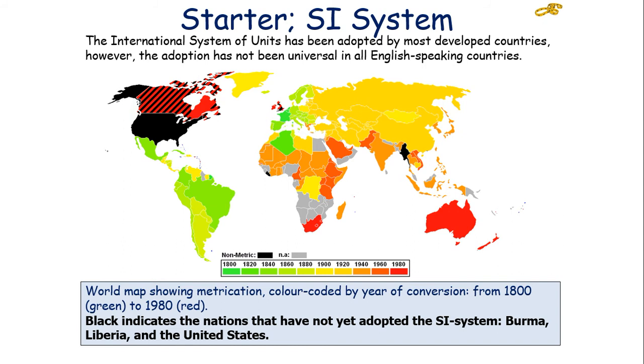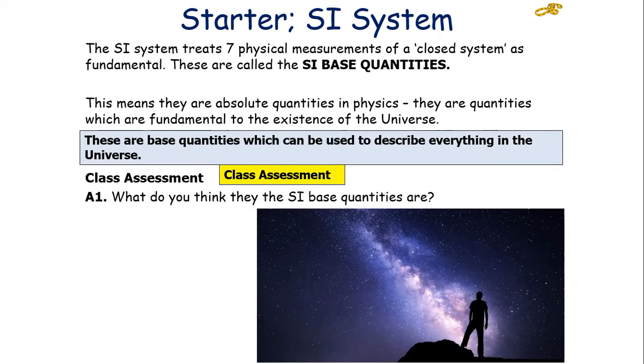In the Metre Convention of 1875, it brought together many different international organizations to not only agree on the definitions and standards of the new system, but also agree rules on writing and presenting measurements in a standardized manner across the world. The international system of units has been adopted by most developed countries, but it's not been universal in English-speaking countries. For example, Burma, Liberia, and the United States have yet to adopt the SI system. The SI system treats seven physical quantities of a closed system as fundamental.